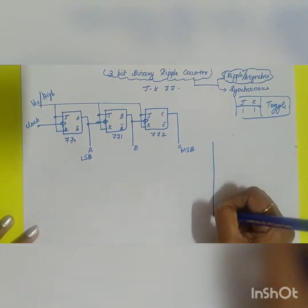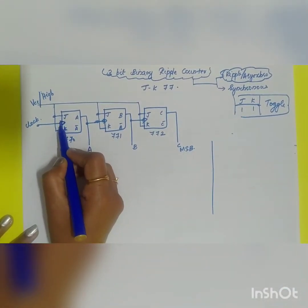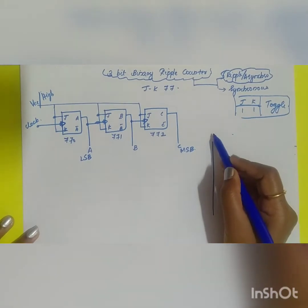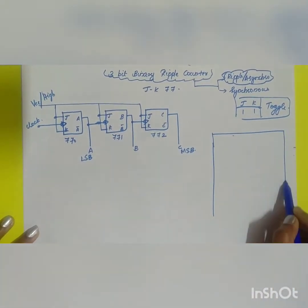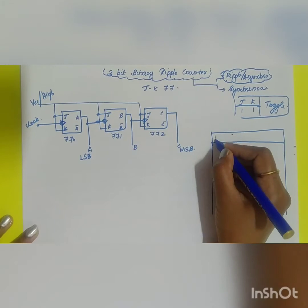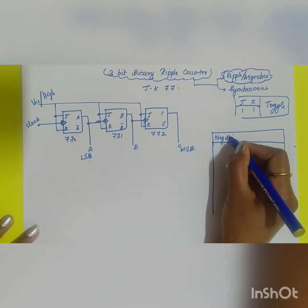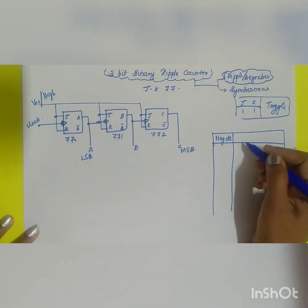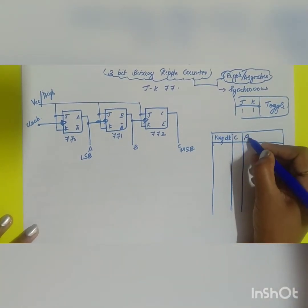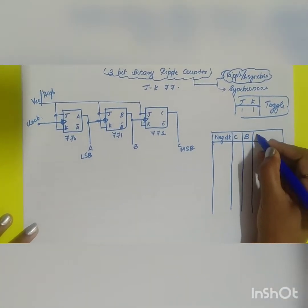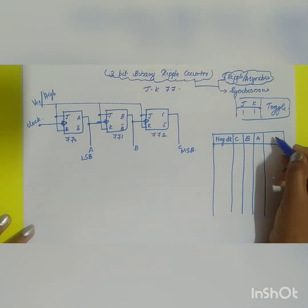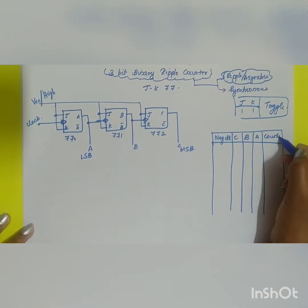Looking at the diagram, there is a bubble structure which indicates that it is a negative edge-triggered flip-flop. Now, if we write the truth table, we have a negative clock column and three output bits representing MSB to LSB, and a counter output column.